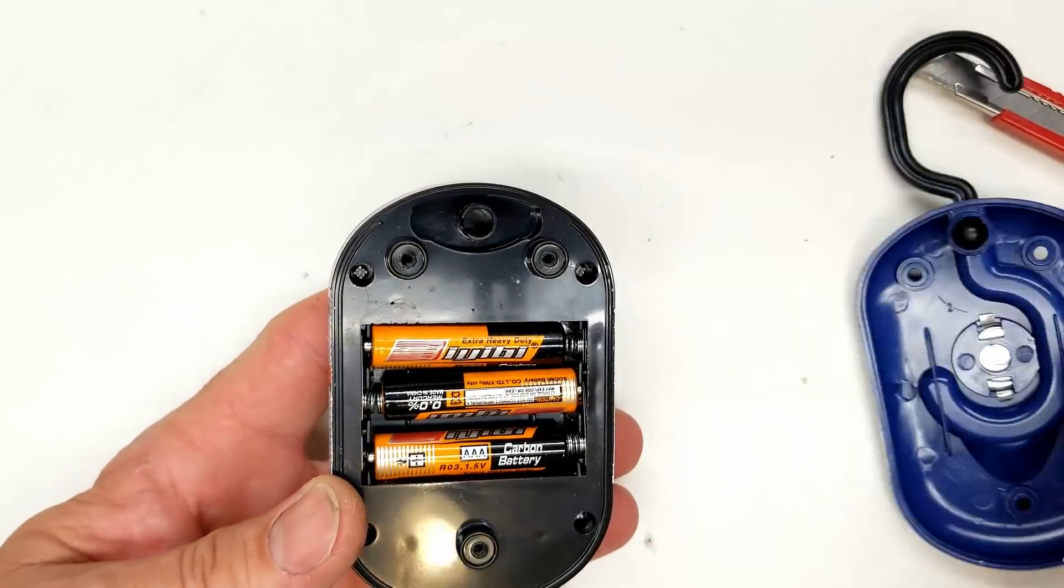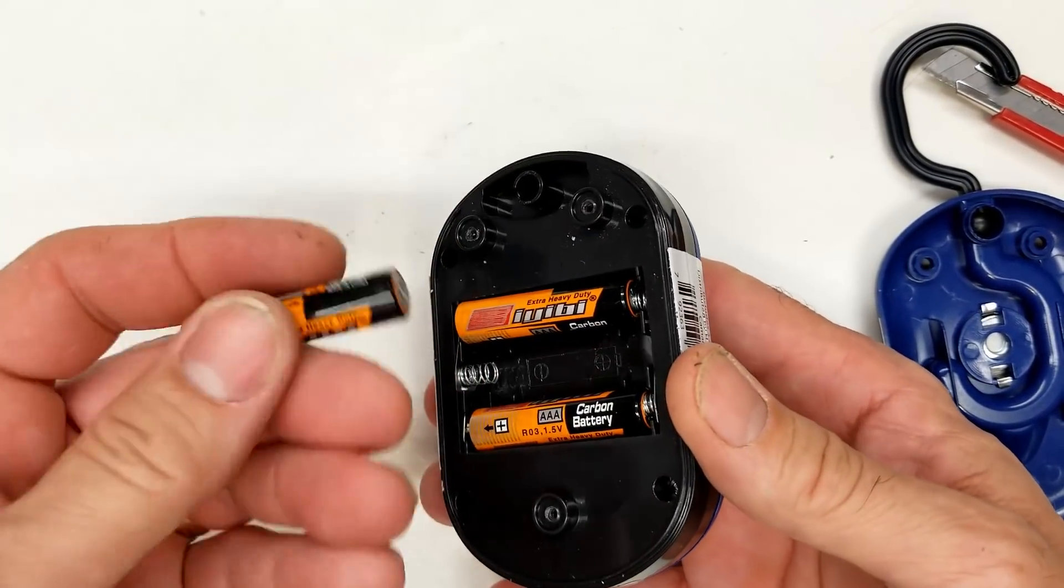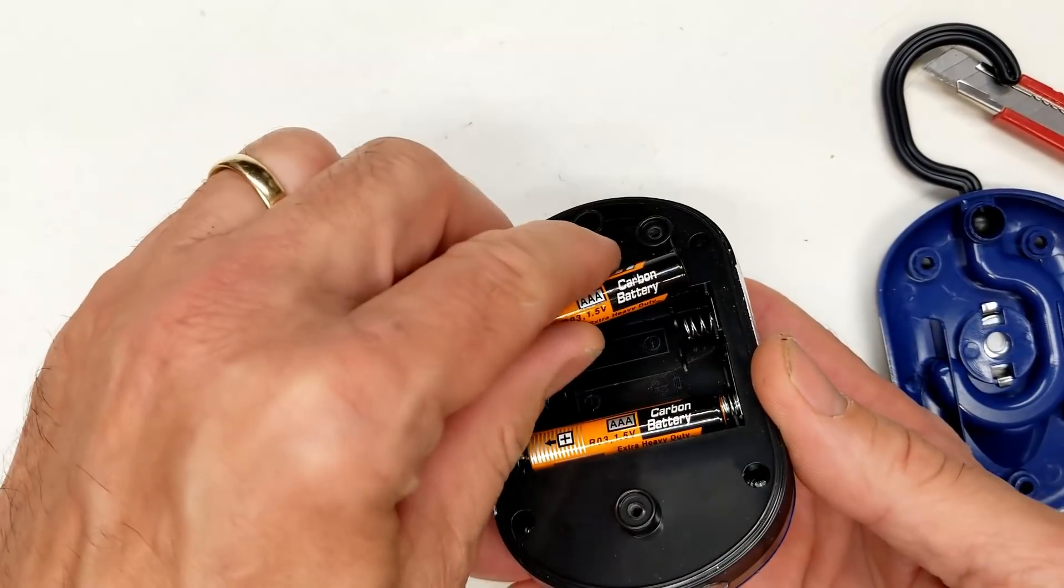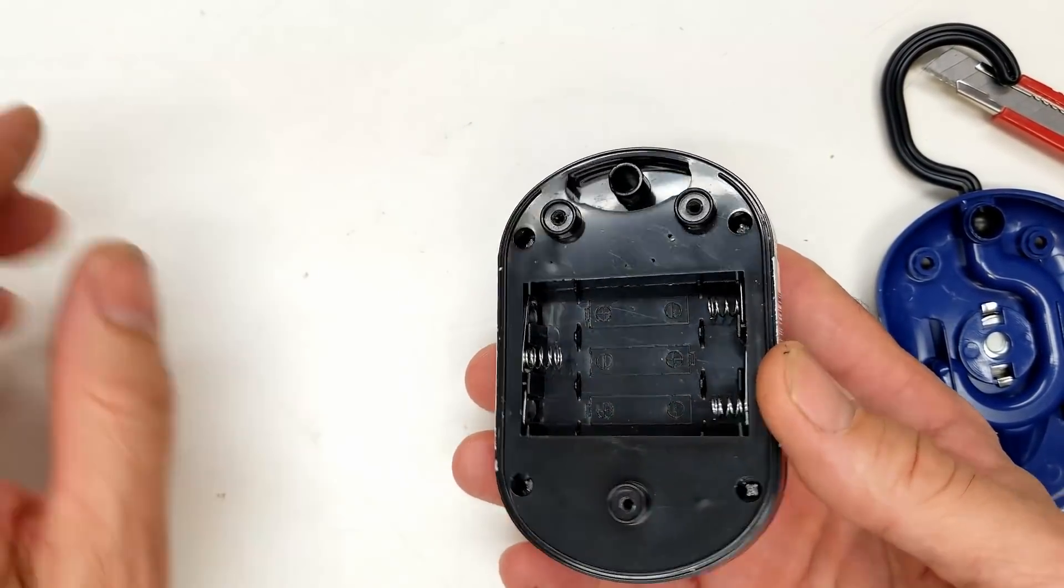All right, definitely came apart. Well, there's the back side open. You see the three AAA batteries that are in there. They're just zinc carbon batteries, very low quality, just enough to get it by.